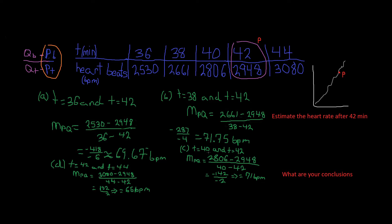Then we do it again for t equals 40 minutes and t equals 42 minutes, finding the slope of the secant line: 2,806 minus 2,948 divided by 40 minus 42. That gives us negative 142 divided by negative 2, which equals 71 beats per minute.